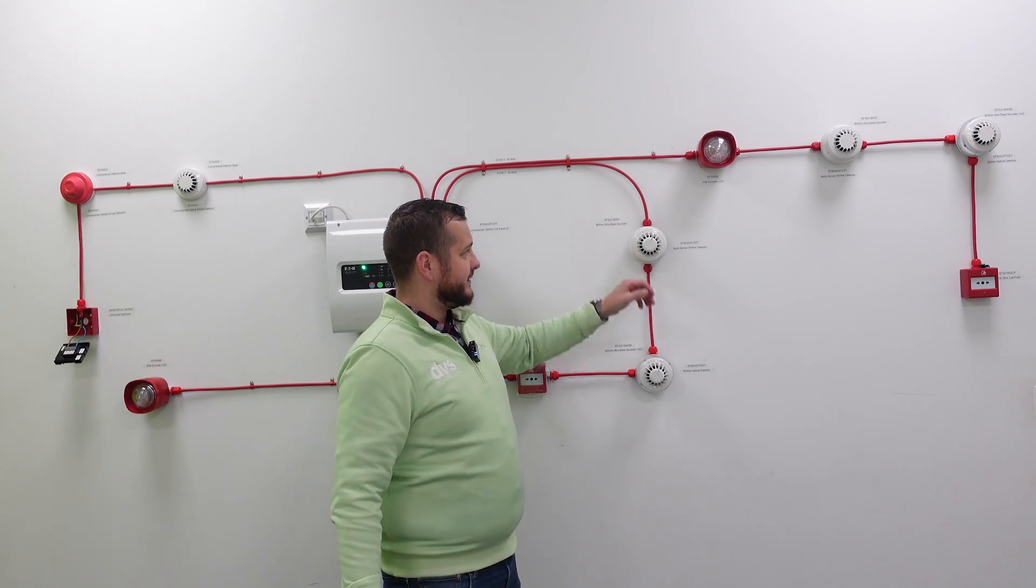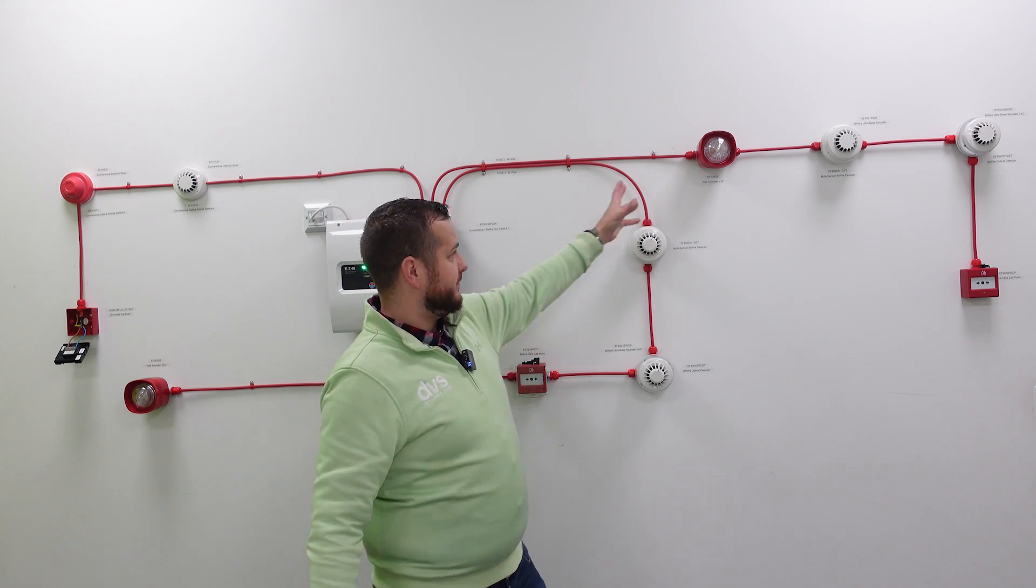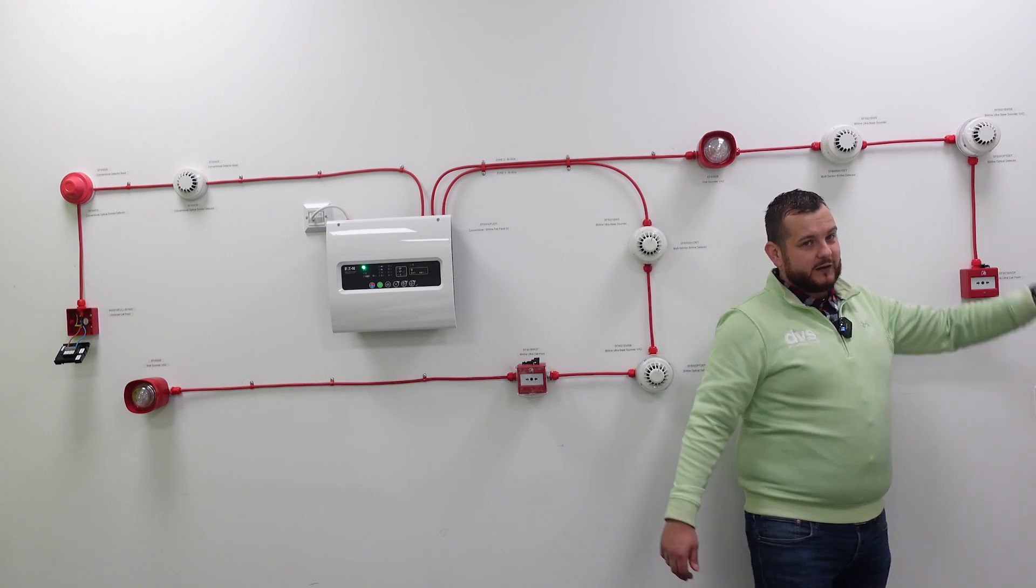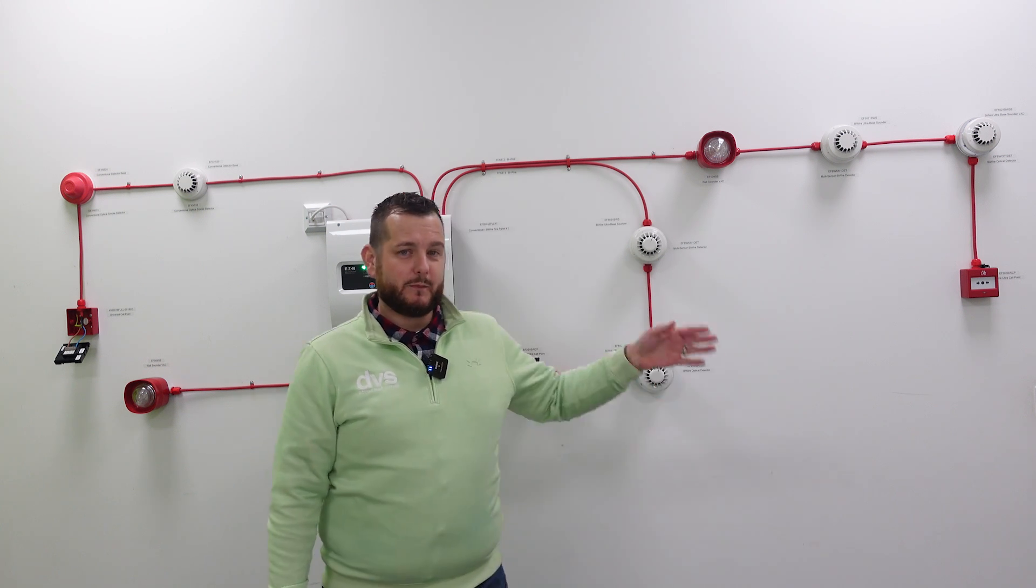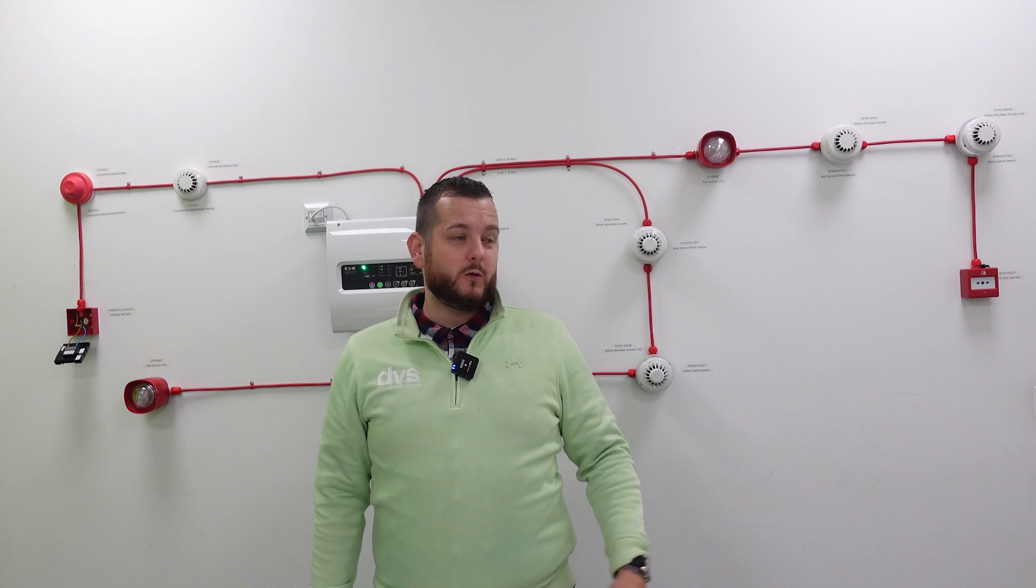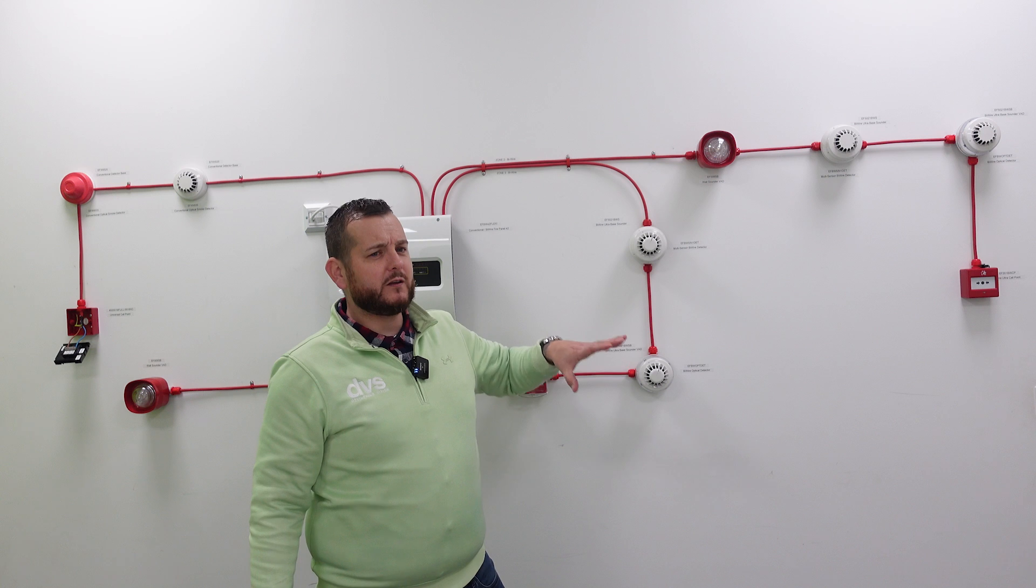The fire alarm product itself: we have the panel, we have the call points, we have the detectors, and we have the VADs or visual and audio devices, or we can have them as audio visual only, sirens, beacons, etc., depending on what you're trying to do. The ByWire is our primary route to market with the Eaton range. There is an extensive range of fire alarm product behind the ByWire system.